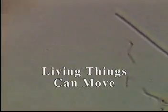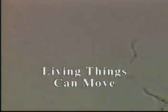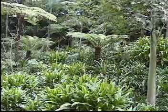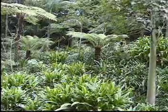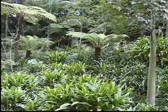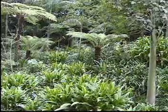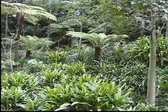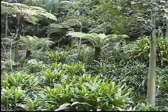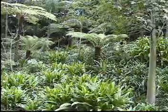The sixth characteristic of life is that living things can move. This characteristic is obvious when movement is fairly rapid, but it is harder to see when it is slow, such as the movements made by plants as they turn their leaves toward the sun.